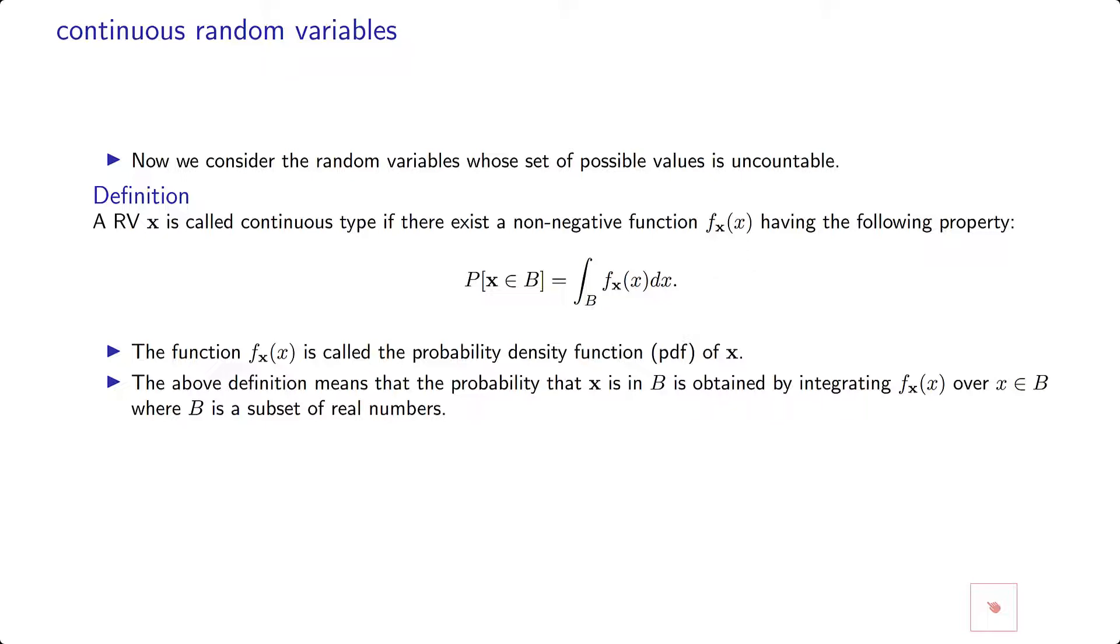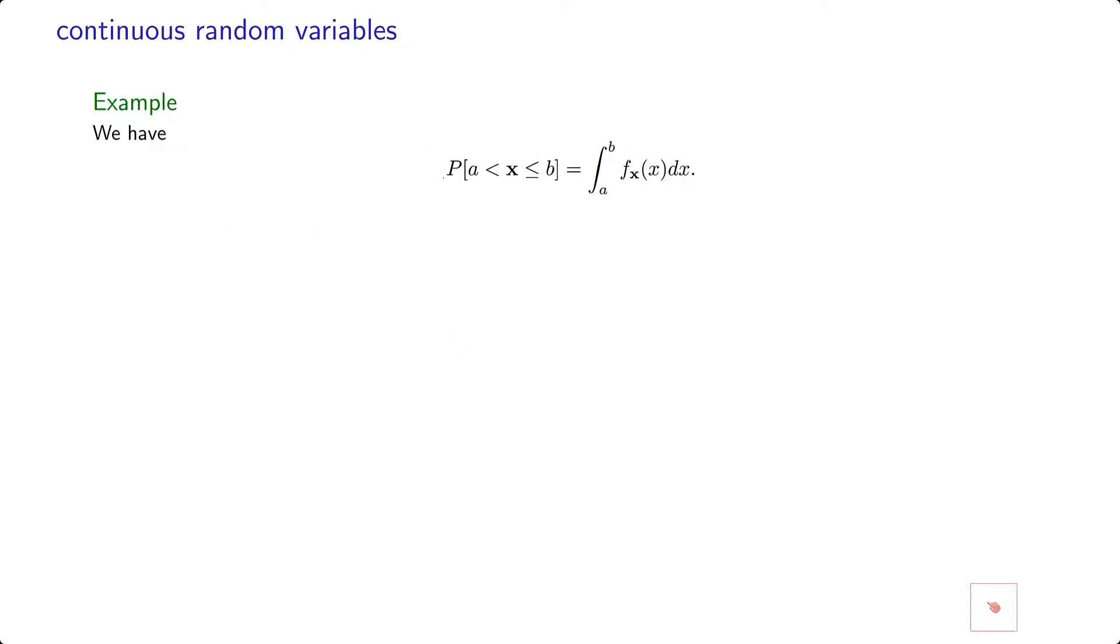So this notation means that the random variable x happens inside B by integrating over this, where B is a subset of real numbers. Not any subset, but a Borel subset of real numbers. Using that definition, probability that x being in the interval a, b is basically equal to this integral, the area underneath of this. So you have a CDF. This is f_x of x, which is non-negative, the total area here is equal to 1. So if you want to be between a and b, you calculate this area.